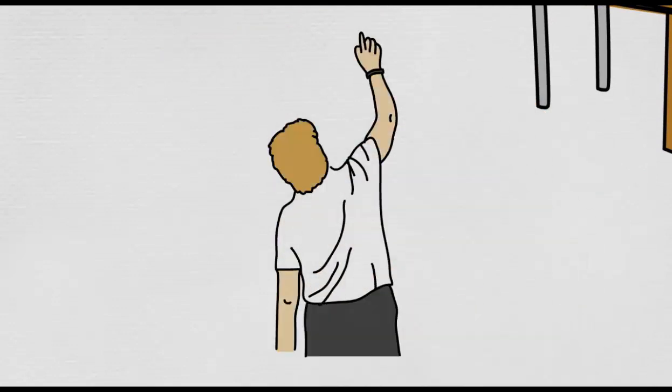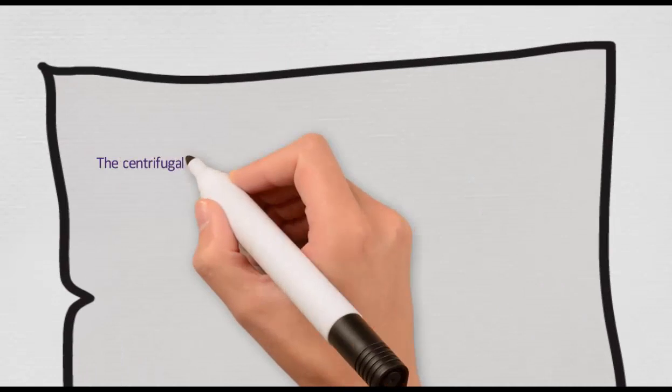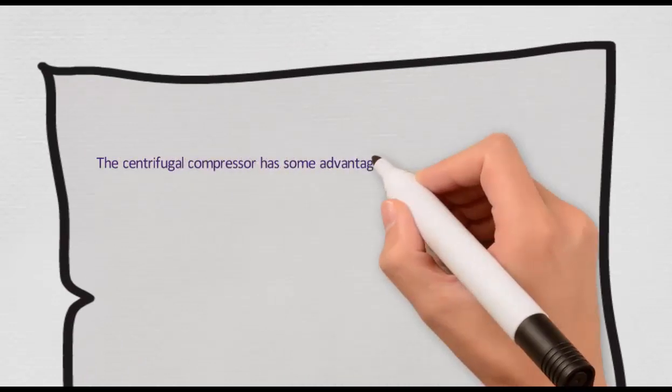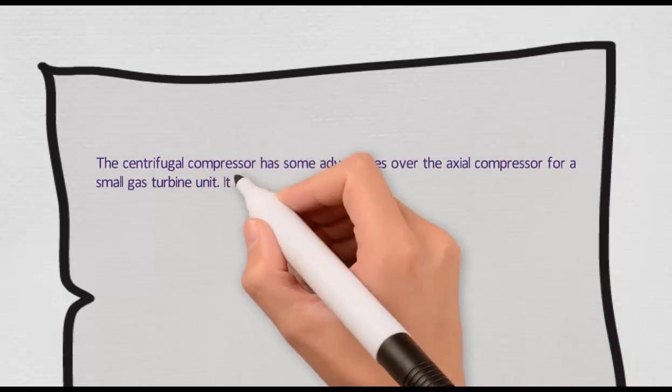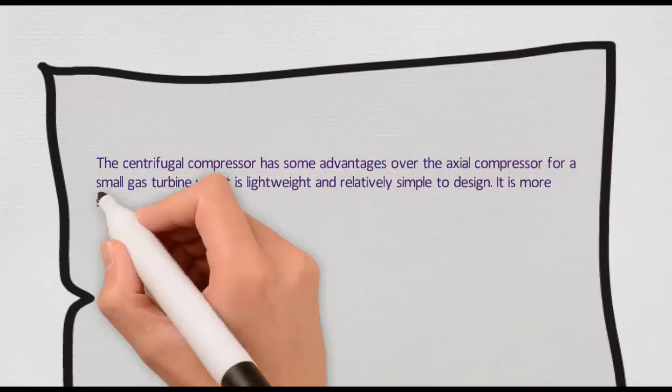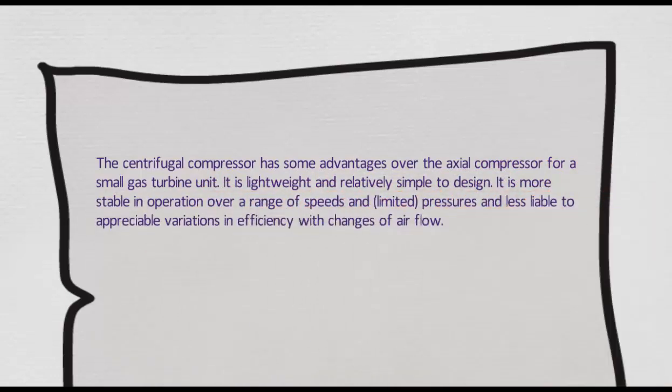The centrifugal compressor has some advantages over the axial compressor for a small gas turbine unit. It is lightweight and relatively simple to design. It is more stable in operation over a range of speeds and limited pressures and less liable to appreciable variations in efficiency with changes of airflow.